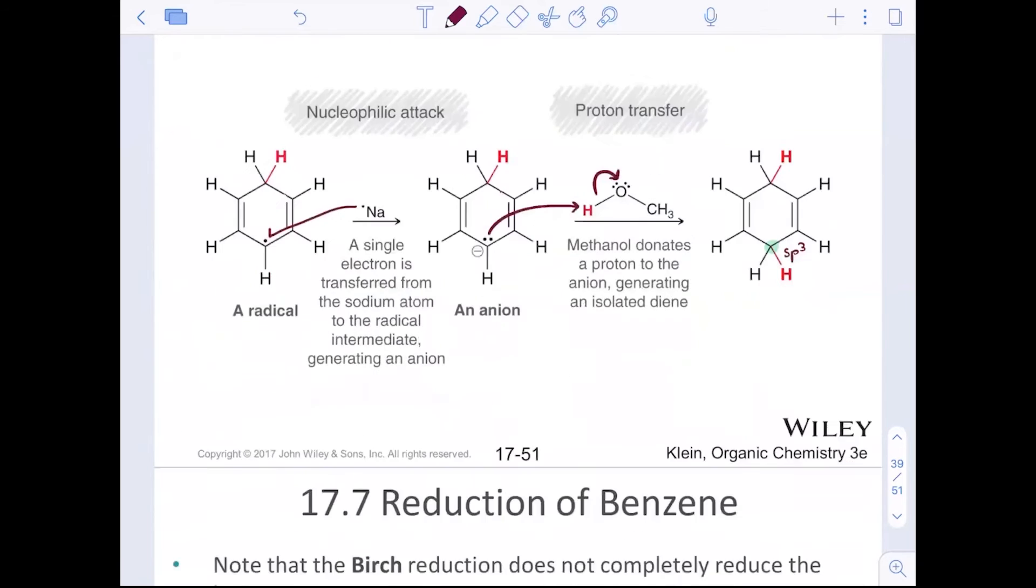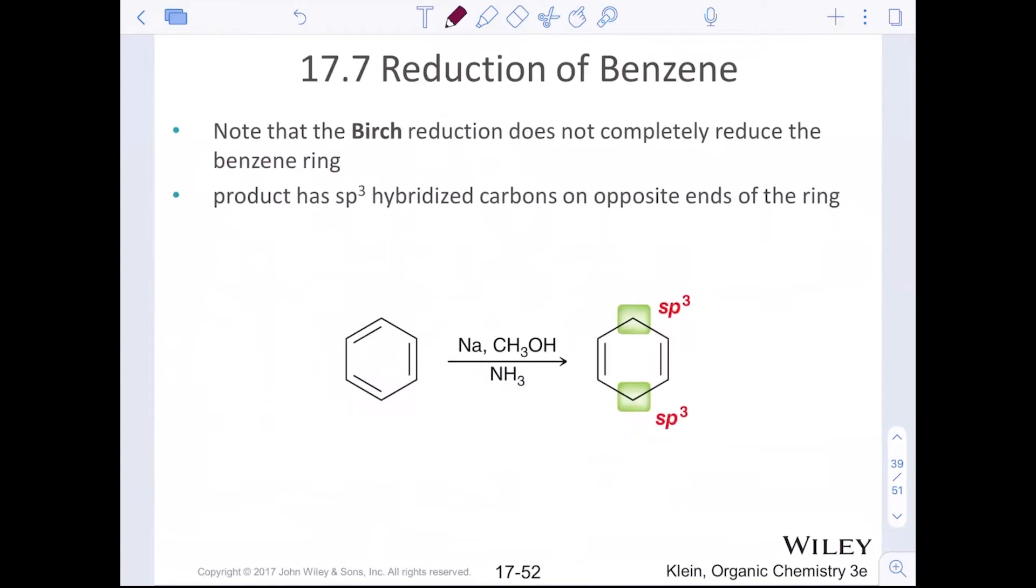And then that anion can go and pick up another proton. So again, converting the second atom to sp3 hybridized. Nuc attack, followed by proton transfer. The Birch reduction does not completely reduce the benzene ring, but it does keep the functionality of two alkenes there, but now they're not conjugated. So now those pi bonds can react in any reaction that we saw a pi bond react last semester, in chapter eight or nine. So the product has two new sp3 hybridized carbons on opposite ends of the ring.